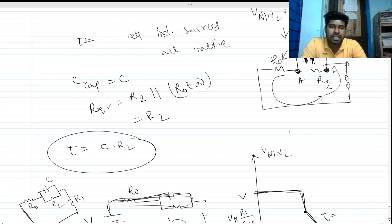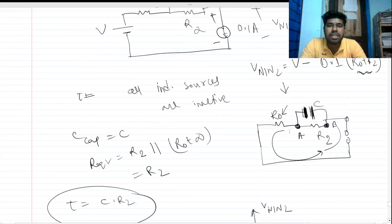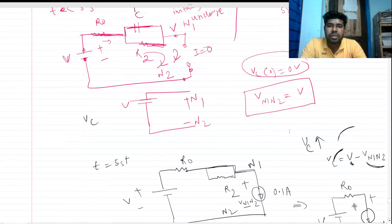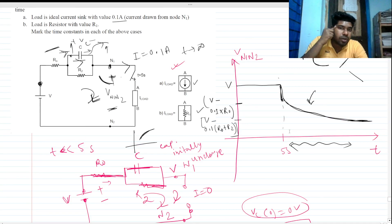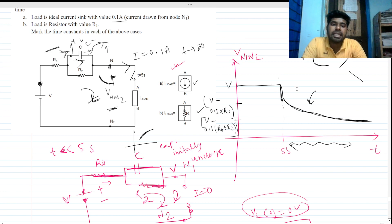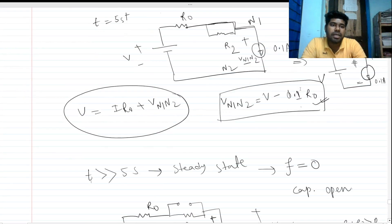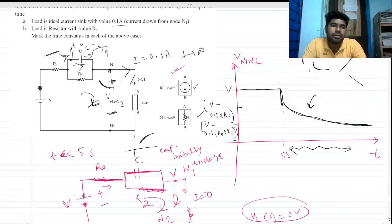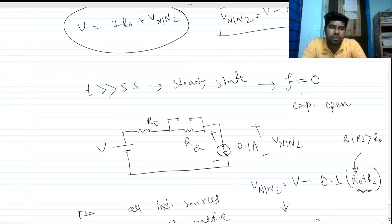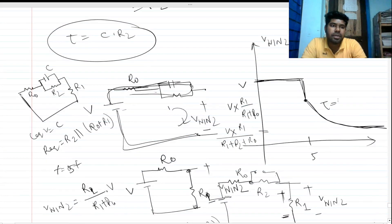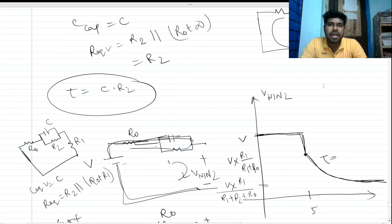This is a very good circuit that will build your intuition in a more general way. For these two cases the time constants are different, but the nature of the waveform is the same. Try to solve it yourself first, then check the solution. Thank you everyone, please put your valuable feedback.